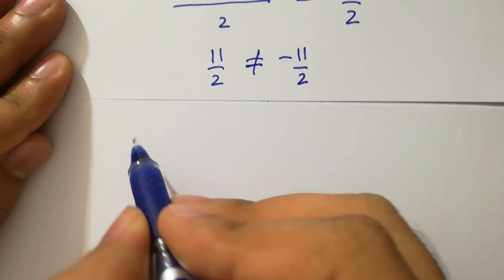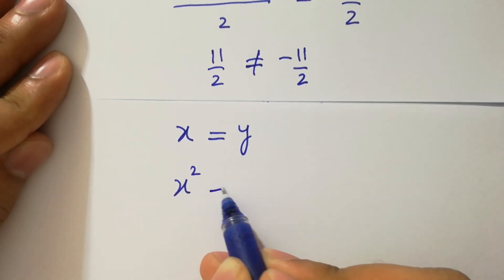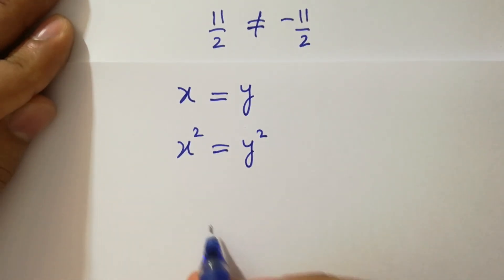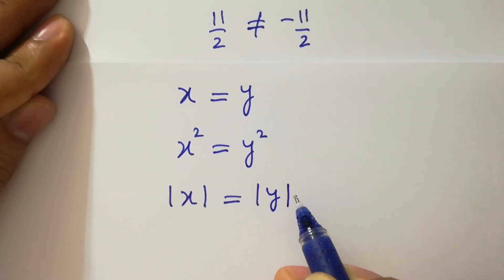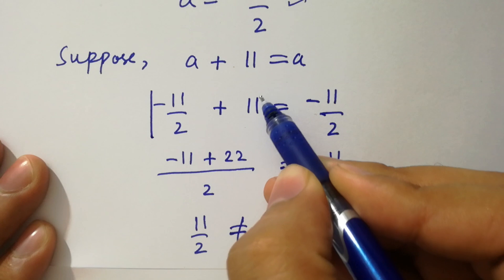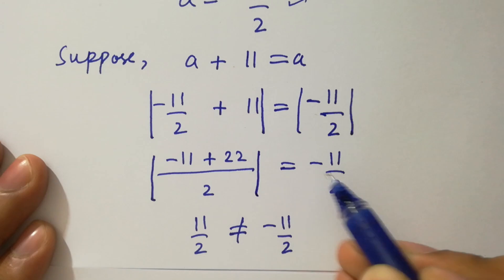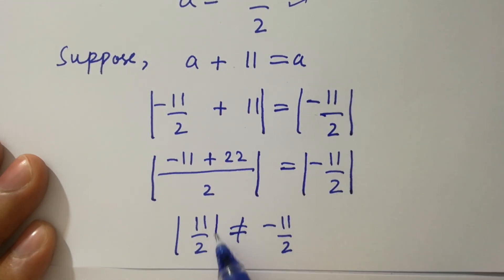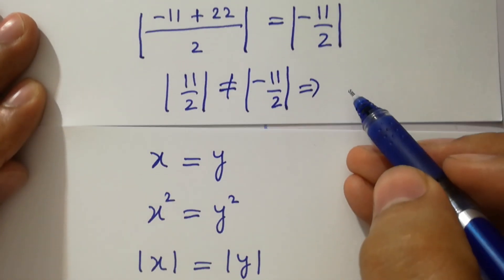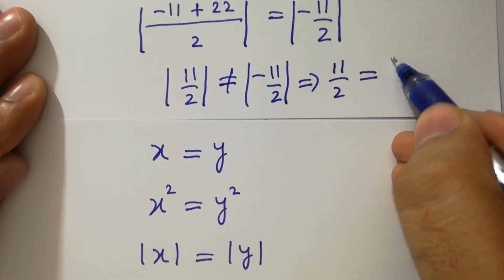As x equal to y, x square equal to y square, and also absolute value of x equal to absolute value of y, then we should take modulus on both sides. By this we get 11 over 2 which is equal to 11 over 2.